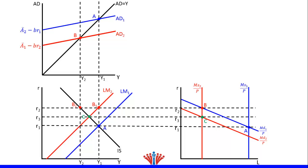From the IS-LM model, we draw a vertical dotted line crossing point C to reflect the new equilibrium output Y3 in both the IS-LM model and goods market. The intersection between Y3 and the 45-degree line in the goods market is the new equilibrium point, labeled C. The money demand curve shifted downward, resulting in a lower real interest rate from R2 to R3, which increases investment in the goods market based on the reverse crowding out effect. Consequently, the aggregate demand curve shifts upward crossing point C.